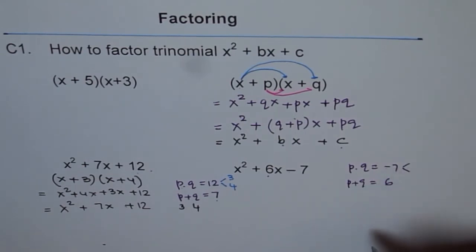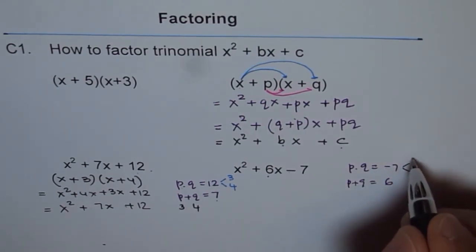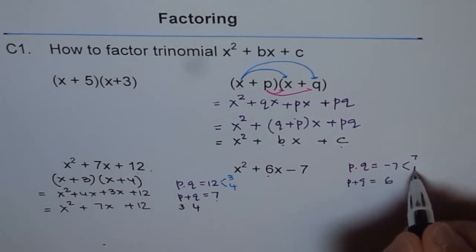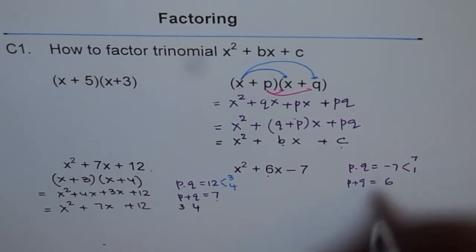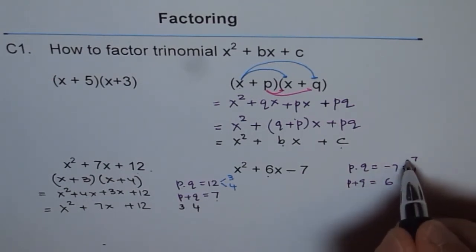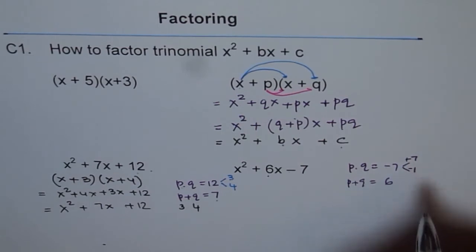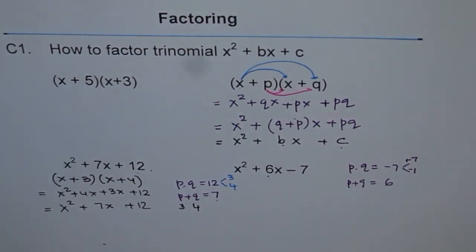Now what could be these numbers? 7, fortunately, is a prime number. So we don't have much choice. So we know it is 7 times 1 is 7. But we need minus here and we need plus 7 when we add. Minus means both have to be of different signs and plus when you add means bigger number is positive. That means 7 is positive and 1 is negative. So that is also a good logic.